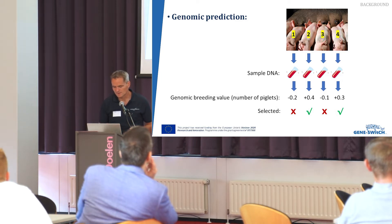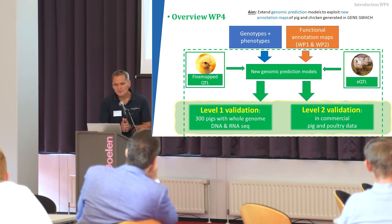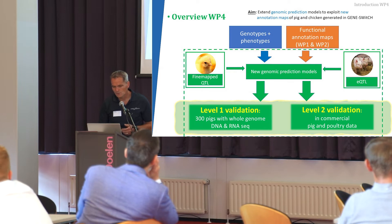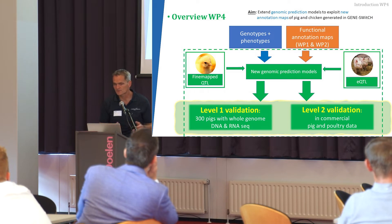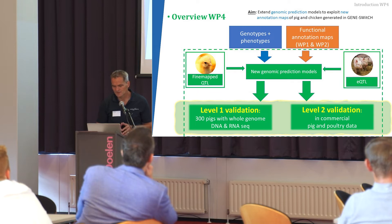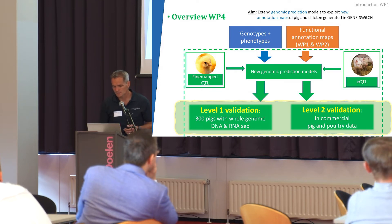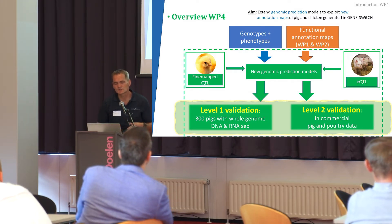Based on the blood sample we can distinguish between those four animals, which is what made genomic prediction very attractive for animal breeders but also plant breeders. Within work package four we use genotypes and phenotypes in prediction models for genomic prediction, and we're going to add functional annotation maps into these models. We need to develop new genomic models — Mario will elaborate on that in about 10 minutes. We could also use fine-mapped QTLs and expression QTLs, but today's focus is more about validation.